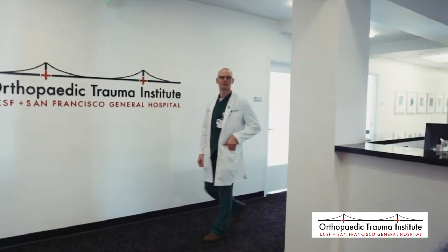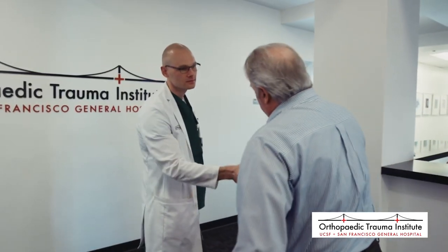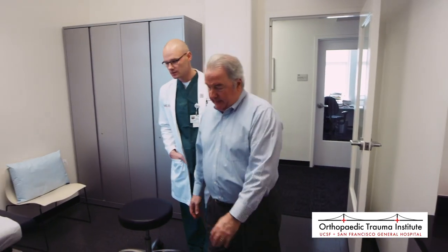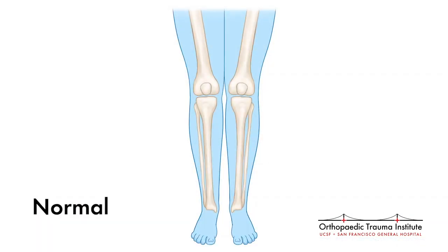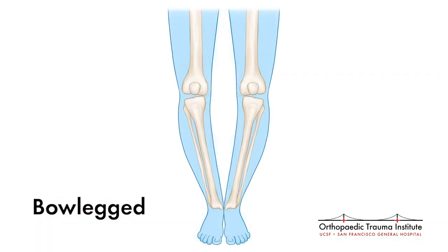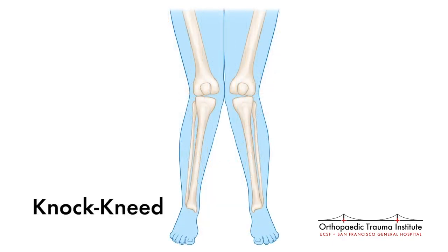The primary symptom of arthritis of any type is pain. Patients who come to our clinic with arthritis almost always have pain in the knee or pain in the hip as their number one complaint, regardless of the cause. Other symptoms include a subtle deformity of the limb — people with arthritis of the knee in particular can notice that they may be becoming more bow-legged or more knock-kneed slowly over time.